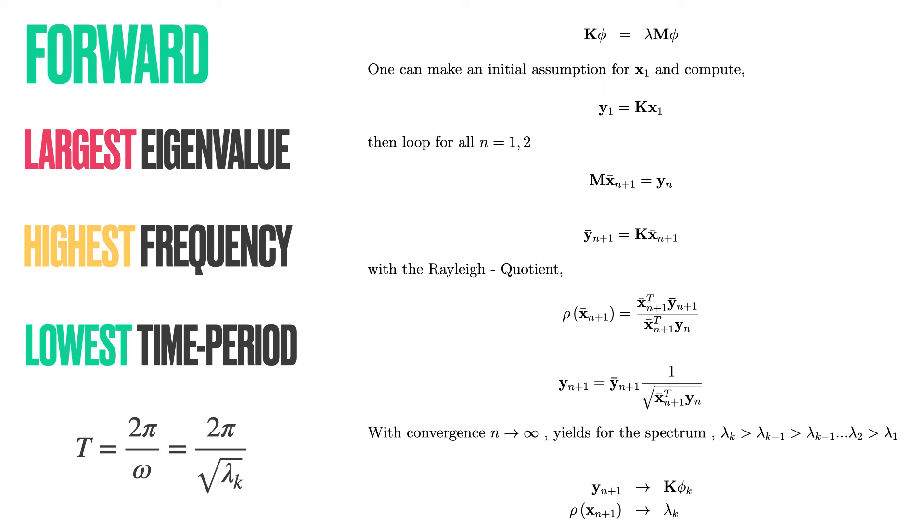After each loop, we compute the change in the eigenvalue. If the change is less than one percentage, we could stop. Once we have the eigenvalue, we can compute the eigenfrequency by taking the square root. As we have the eigenfrequency, we can compute the time period. The forward iteration gives us the lowest time period.